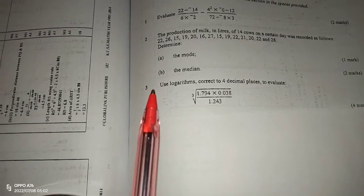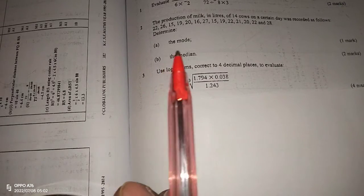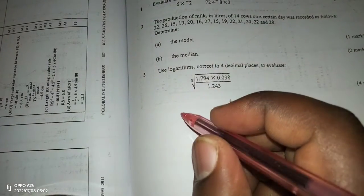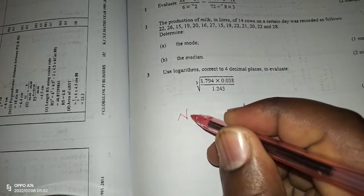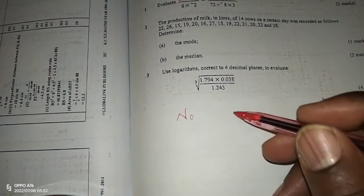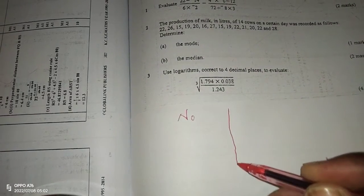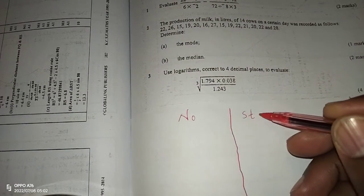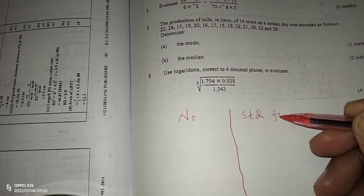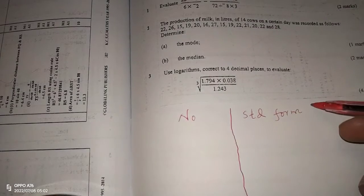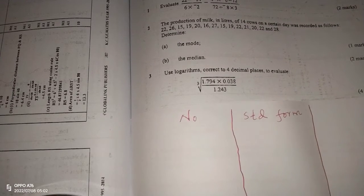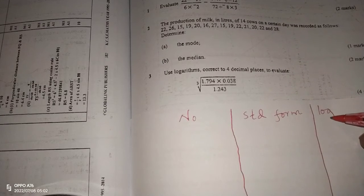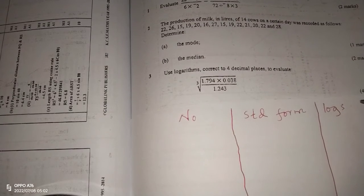So this is how we arrange this question. We start by having the number in a column. Then after the number we get the standard form. Then we have another column for the logarithms of the numbers.